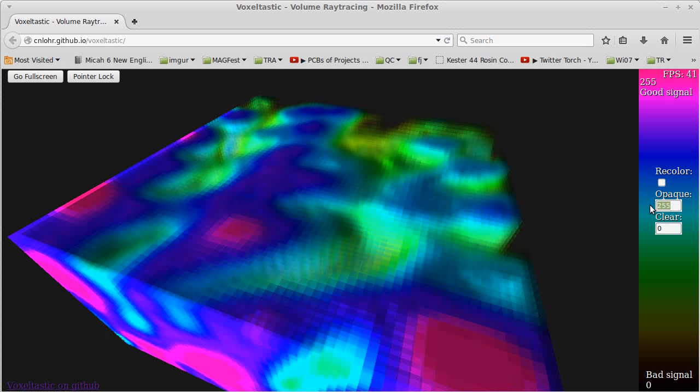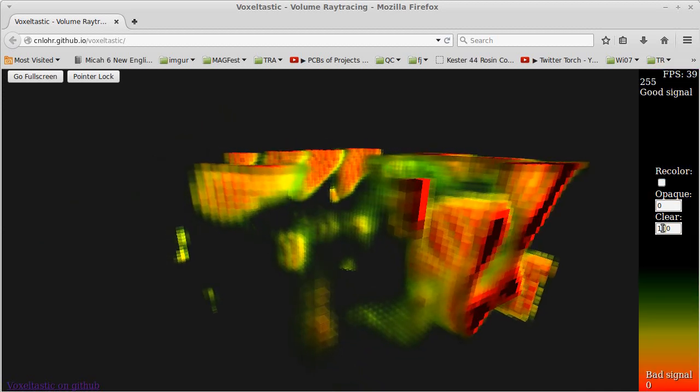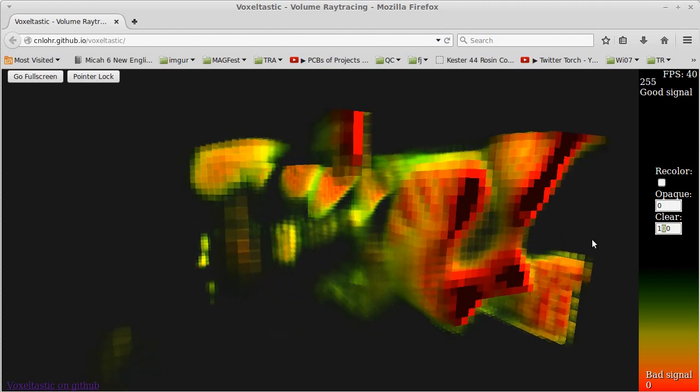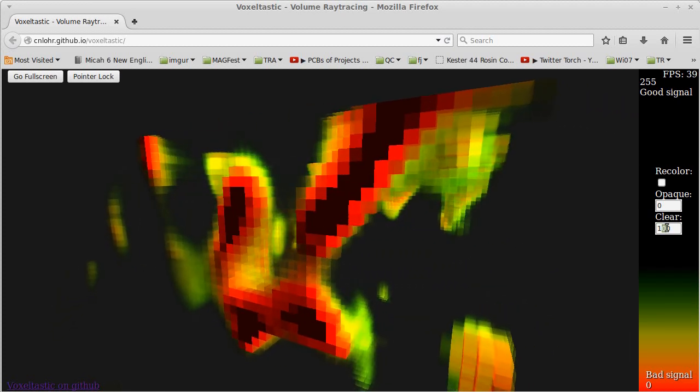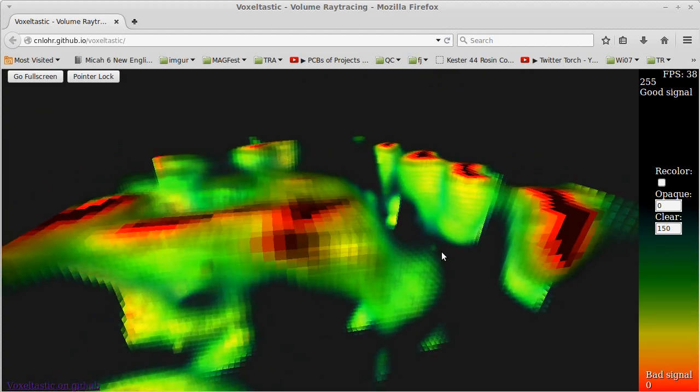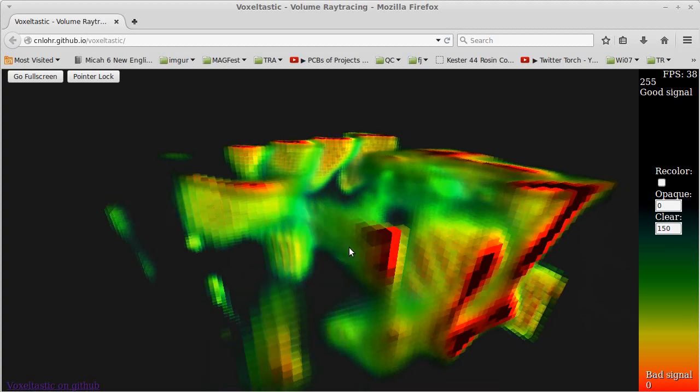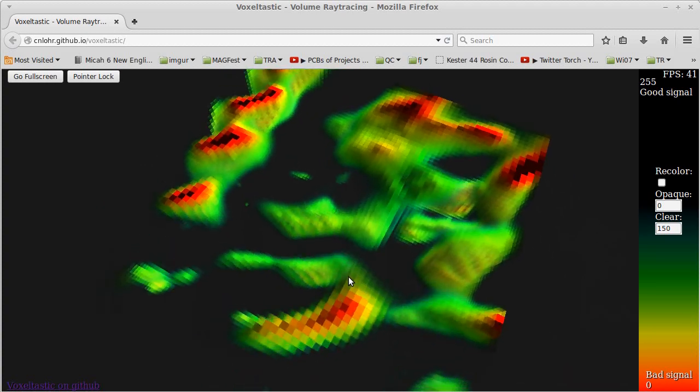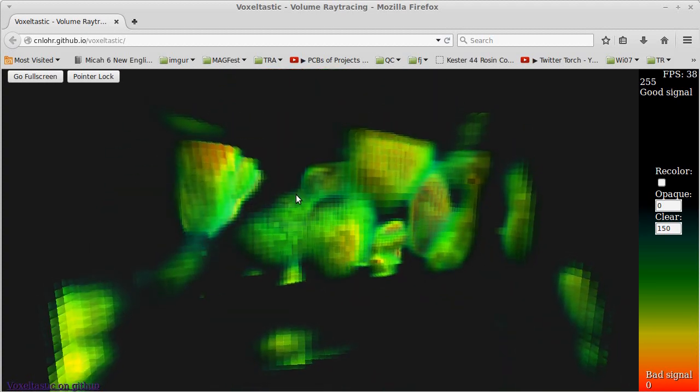We can also flip this around. Wherever the signal is bad is most opaque, and wherever the signal is good is the clearest. So I can open this up some, and we can see some of the internal structure of how that whole area inside that part that I was measuring is shaped in the RF spectrum.